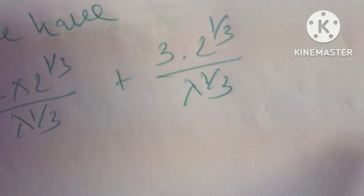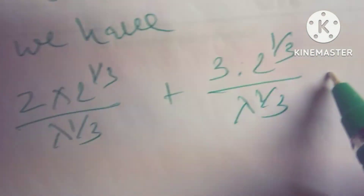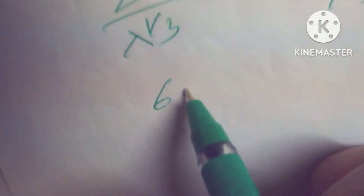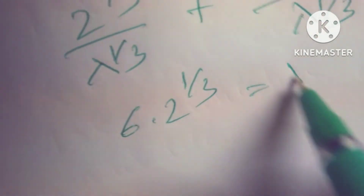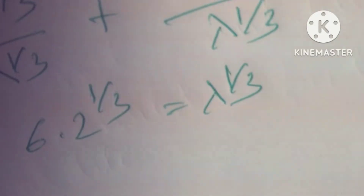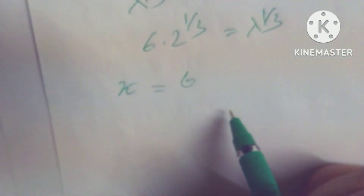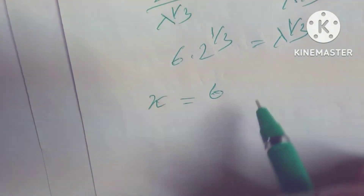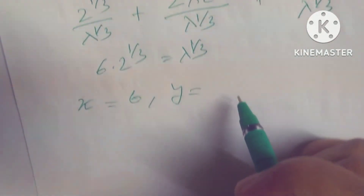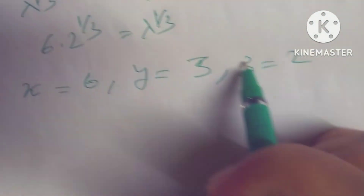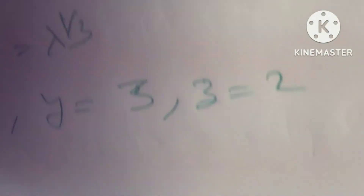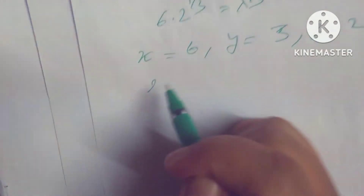Since 1/x plus 1/y plus 1/z equals 1, I get 6 times 2 to the power 1/3 equals lambda to the power 1/3. Hence x equals 6, y equals 3, and z equals 2. Now substituting these back into the given expression to find the minimum value.